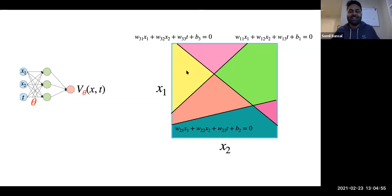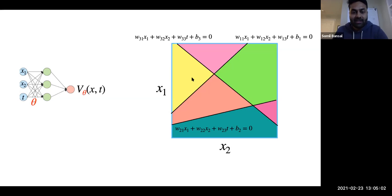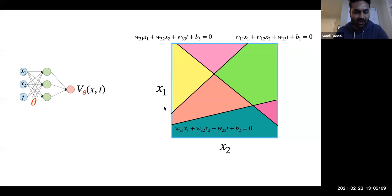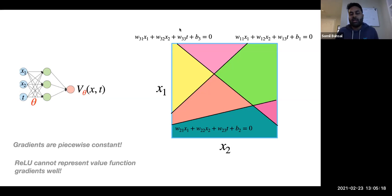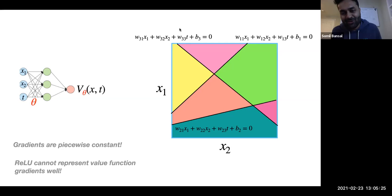Since gradient is constant in each region, I cannot represent a value function whose gradient actually changes within those regions — that's a fundamental problem with ReLU. The gradients are piecewise constant, which means ReLU cannot represent value function gradients very well. This is really problematic when you're trying to learn the value function based on its gradients, which is exactly the case for DeepReach.